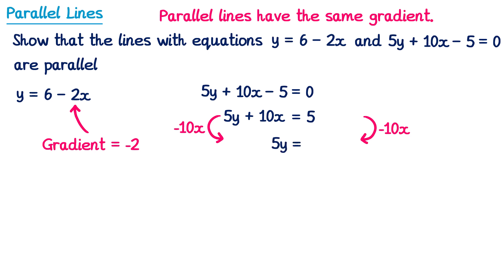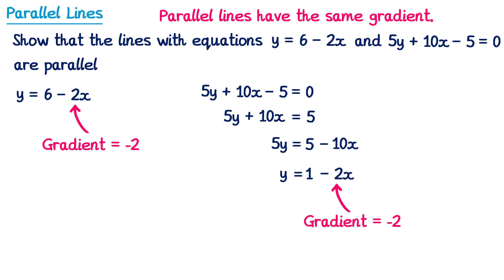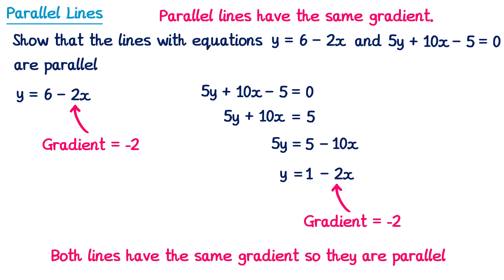Now divide both sides by 5: 5y divided by 5 is just y, 5 divided by 5 is 1, and negative 10x divided by 5 is negative 2x. We can see that the gradient of this line is also negative 2. So we write the concluding statement: both lines have the same gradient, so they are parallel.